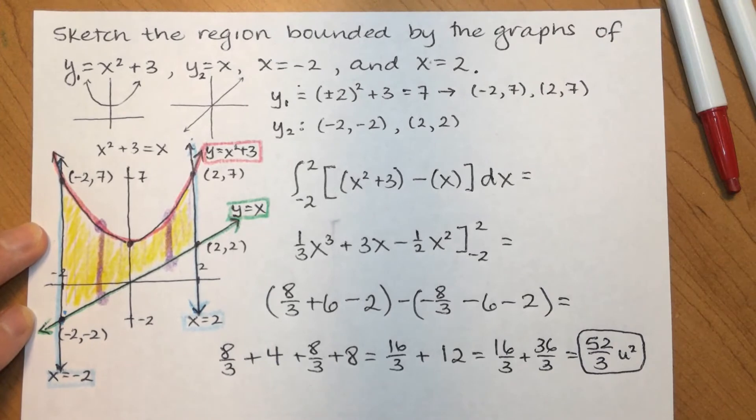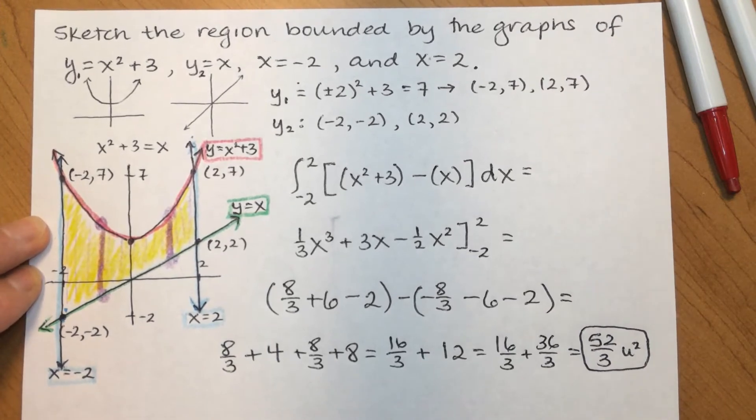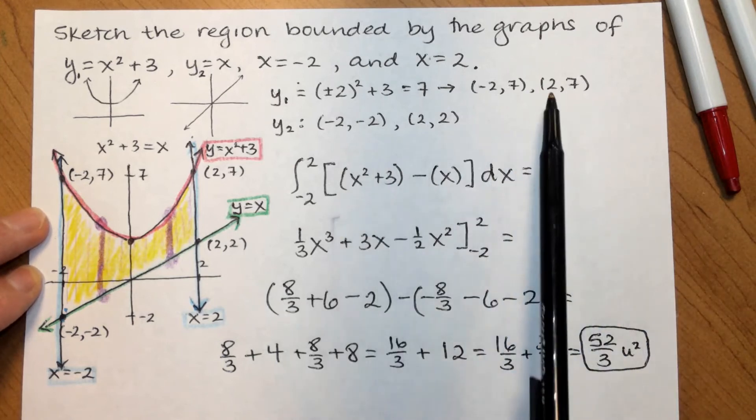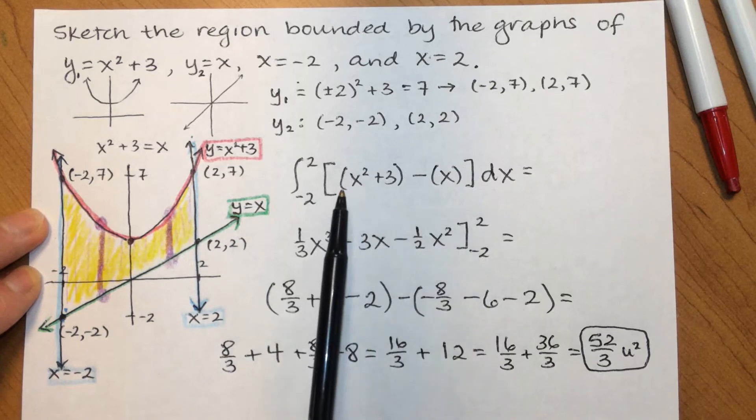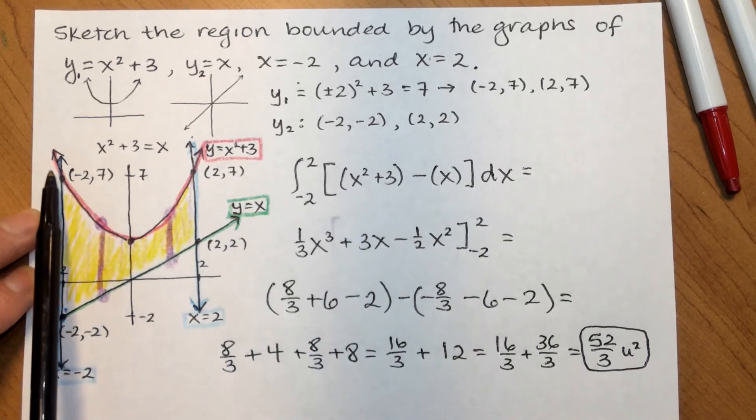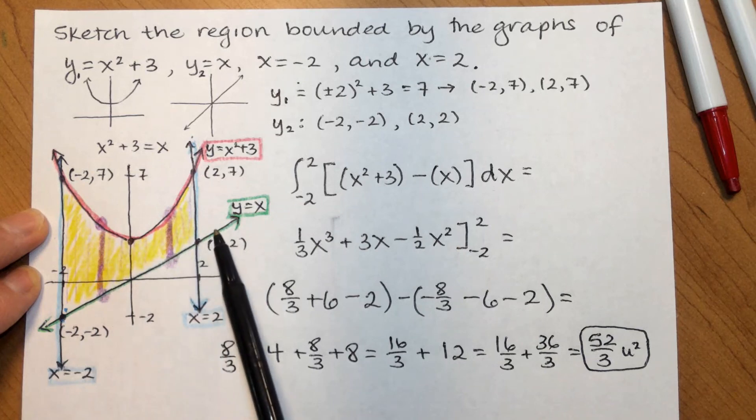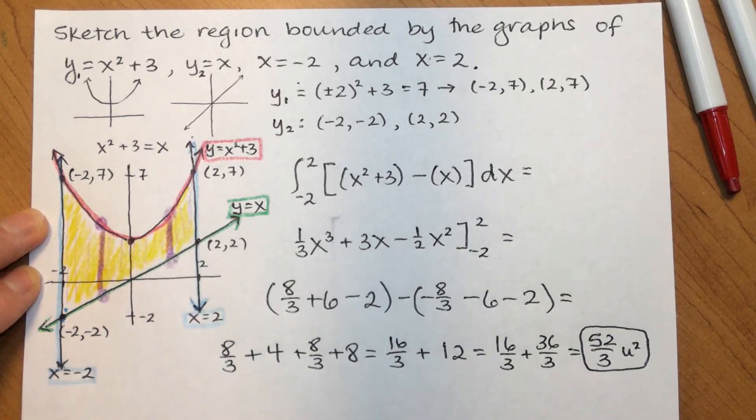So, again, you want to carefully sketch the graph. Find intersection points if there are any. Otherwise, find points on the boundaries of your region. Set up an integral. The curve on top minus the curve on bottom. And, then carefully integrate.